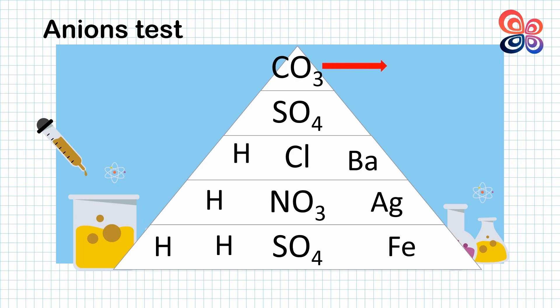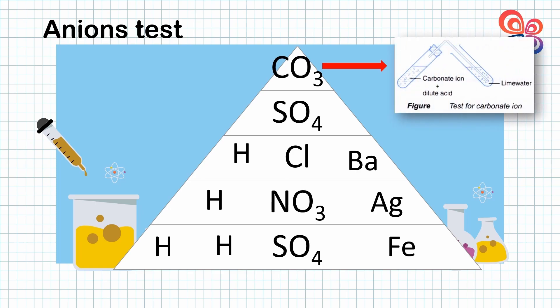To test the presence of carbonate, dilute acid is used. Drop a few drops of dilute acid to the lime water. As a result, the air bubble is produced and the lime water turns cloudy. This shows that the carbonate ion is present. The air bubble is carbon dioxide gas which turns lime water into cloudy due to the formation of calcium carbonate.